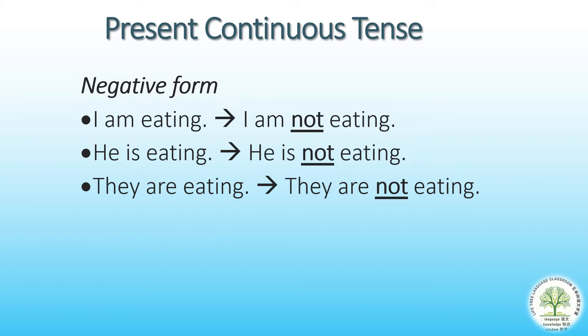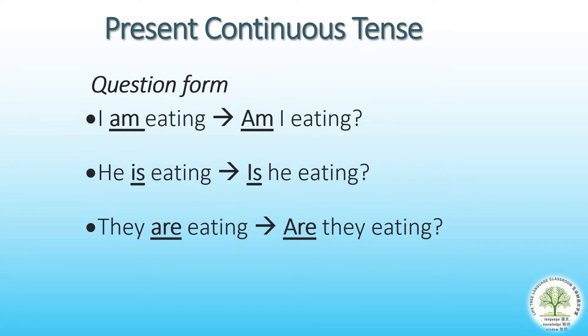For the negative form, we just insert 'not' in between the be-verb and the verb with -ing. For the question form, we readjust the be-verb to the front, as shown in the examples above.